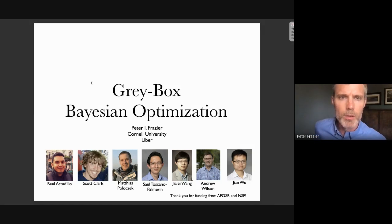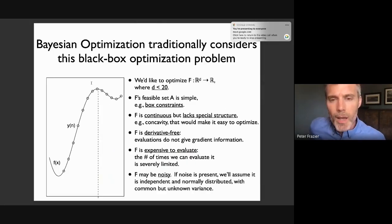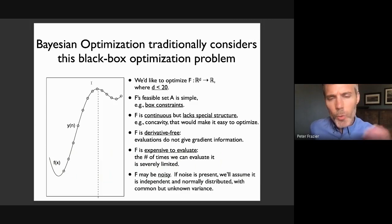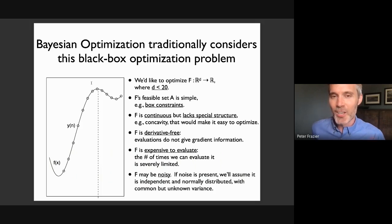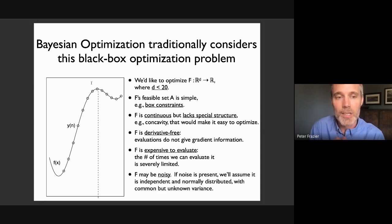I'm going to be talking about an area that I'm really excited about called gray box Bayesian optimization, and I'll be discussing the work of quite a few different students and collaborators of mine, as well as some other papers involved in this line of research. I assume that everyone knows the basics of Bayesian optimization, but I want to make sure that for people who are new, they have a foundation so the things I say make sense.